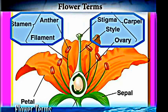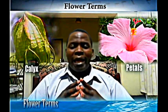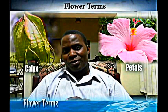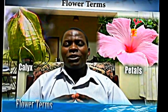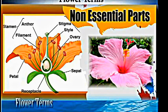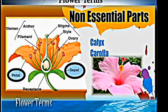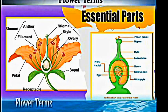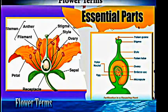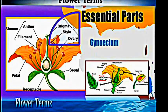There are many parts on the flower, but there are those that are essential and others that are non-essential. The non-essential organs on the flower are the calyx and the corolla. The essential parts on a flower are the reproductive organs, which are the gynoecium and the androecium.